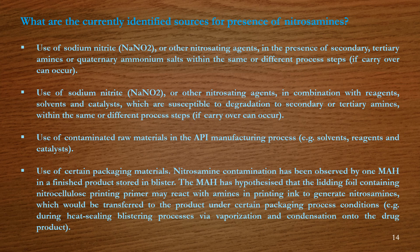Third, use of contaminated raw materials in the API manufacturing process, e.g. solvents, reagents and catalysts. Fourth, use of certain packaging materials. Nitrosamine contamination has been observed by one MAH in a finished product stored in a blister. The MAH hypothesized that the lidding foil containing nitrocellulose printing primer may react with amine printing ink to generate nitrosamines, which would be transferred to the product under certain packaging process conditions such as heat sealing blistering processes involving vaporization and condensation onto the drug product.